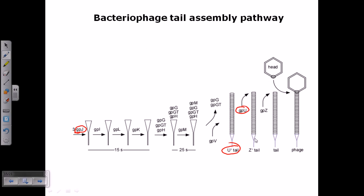Then they add gp z and produce what you call a matured tail. We cannot call a phage tail matured until and unless it has two important proteins: one is the u protein, another one is the z protein.